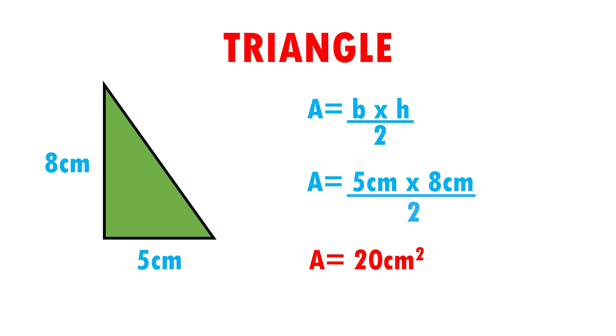This means that our triangle can fit 20 squares of 1 cm per side. Very easy, right?